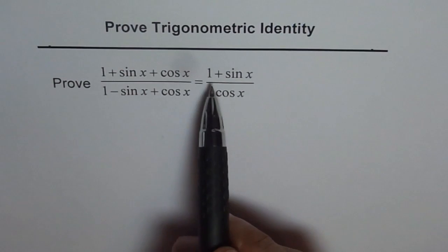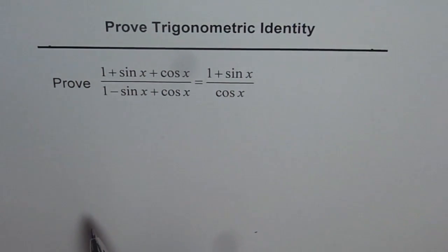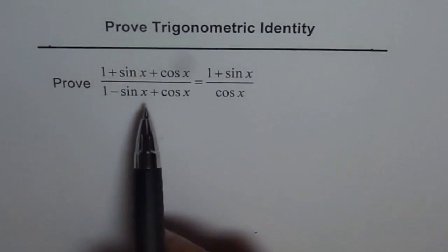On the right side, we need (1 + sin x) over cos x. Since the left side is more complicated than right, we should start from the left side. What we will do here is kind of rationalize, multiply this fraction with (1 + sin x).